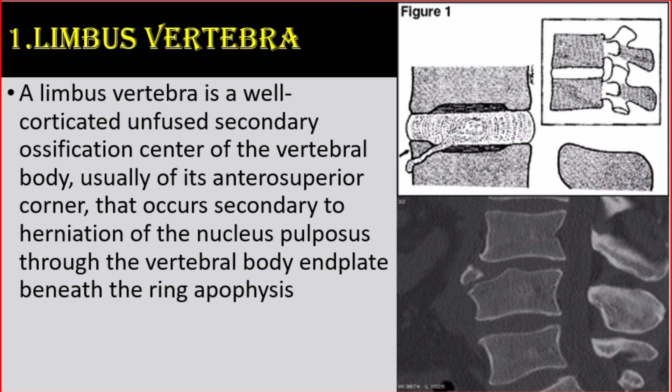A limbus vertebra is a well-corticated, unfused secondary ossification center of the vertebral body, usually of its anterosuperior corner. It occurs secondary to herniation of the nucleus pulposus through the vertebral body beneath the ring apophysis.